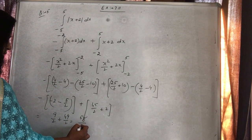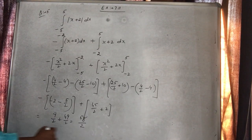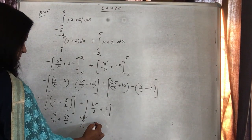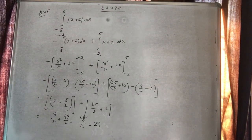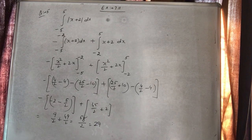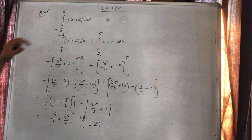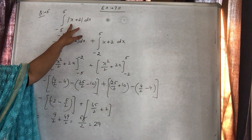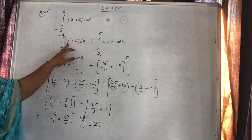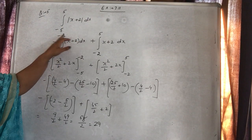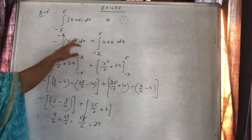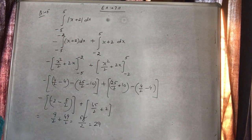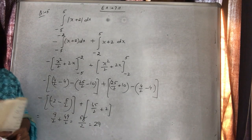The answer is 29. Toh integral of minus 5 to 5, mod of x plus 2 dx — jahaan function mod ka aayega, wahaan x ko is tarah se break karenge ki jo value function ko zero kar rahi ho, aur woh value upper se lower limit mein ho.